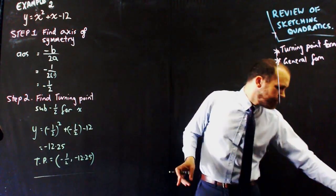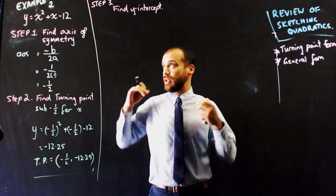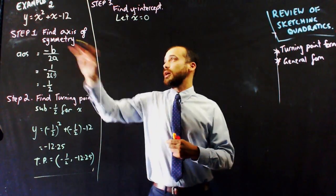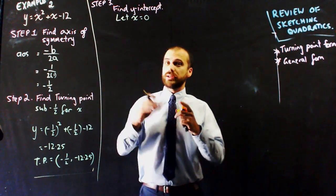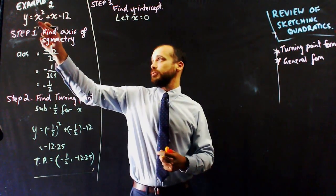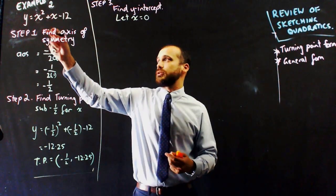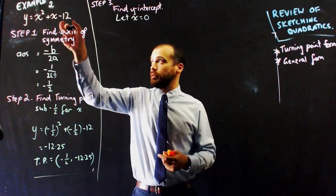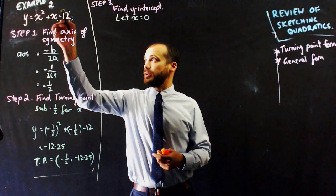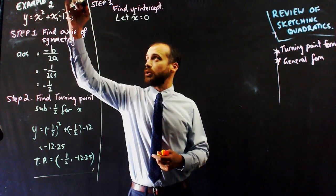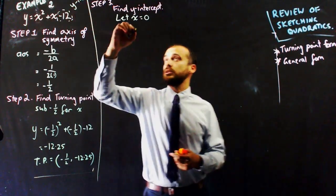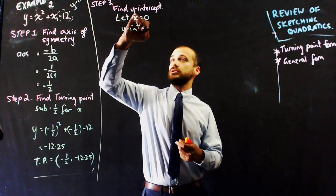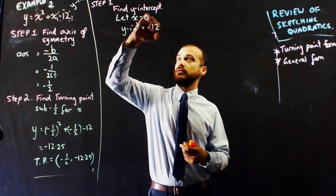The next step is to find the y-intercept, which is very simple — let x equal 0. In this case, x squared becomes 0 and x becomes 0, leaving just the c value, which is always the y-intercept. So the y-intercept is equal to negative 12.